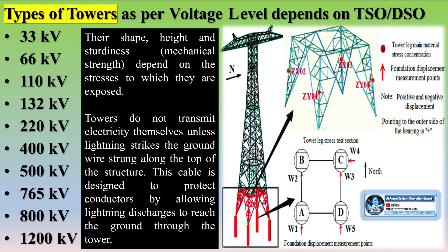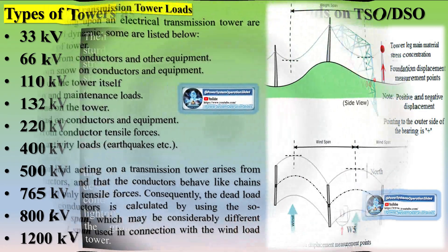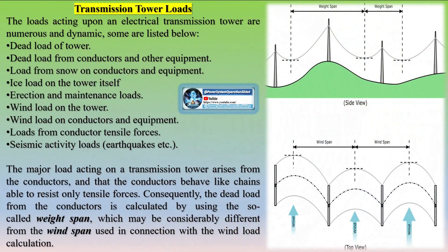Towers are classified according to their use, independent of the number of conductors they support. A tower must withstand mechanical loads from a range of directions, e.g., straight, at an angle, etc. To simplify tower design and ensure overall economy in cost and maintenance, tower designs are generally confined to a few standard types.